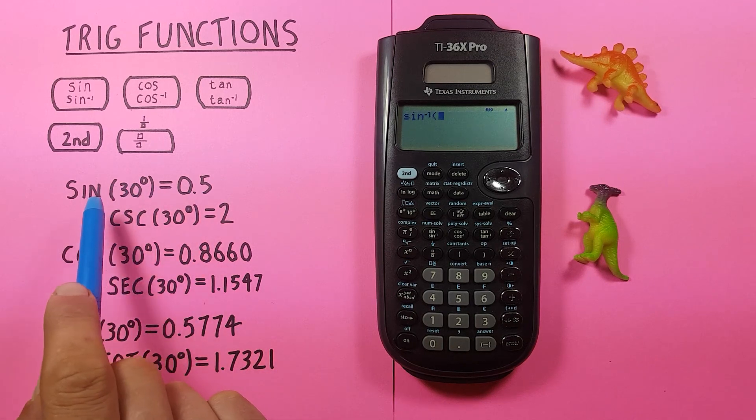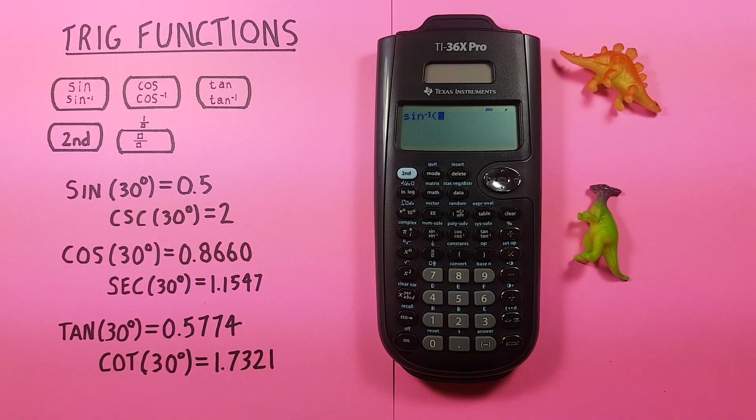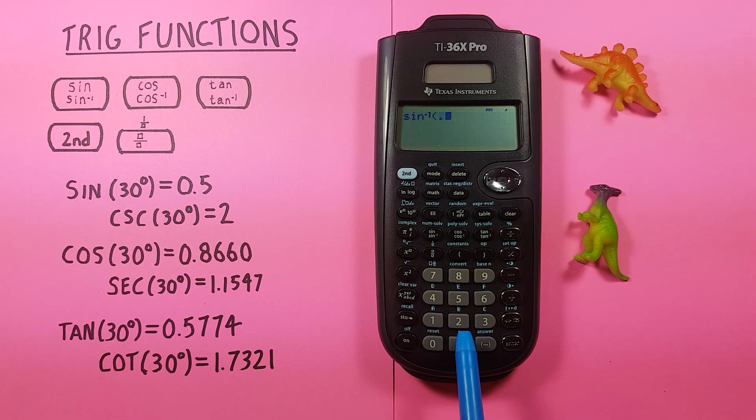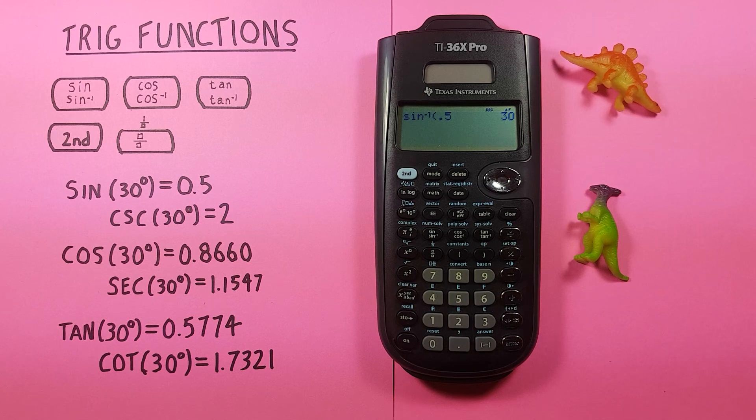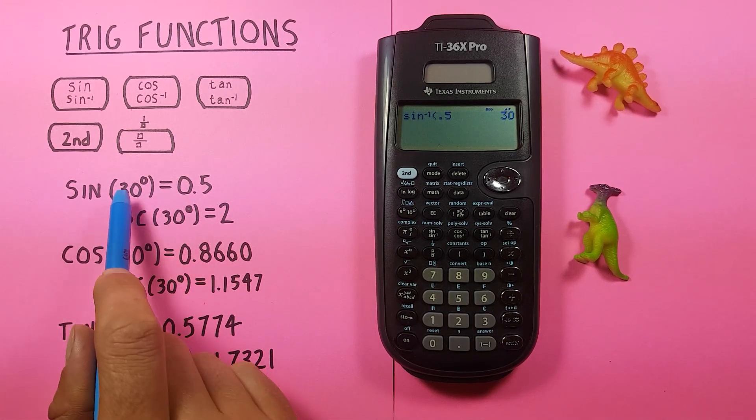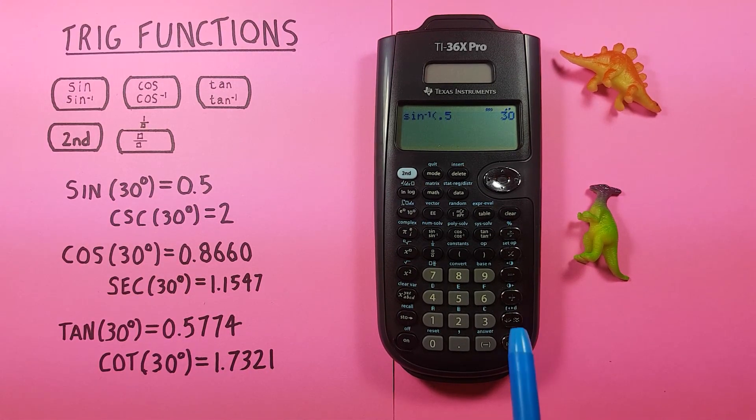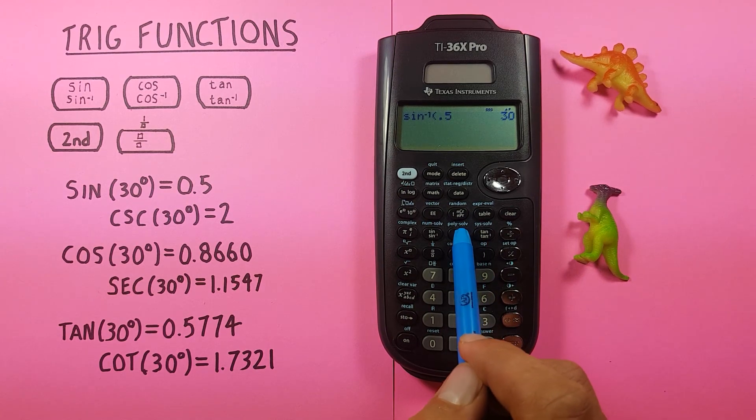Now what this is useful in doing is going from say the 0.5 that we got back to the 30 degrees to figure out how many degrees we used initially. So if we enter 0.5 here and press enter, you can see we get 30, which is correct.